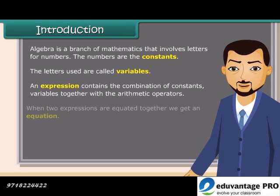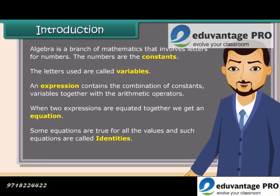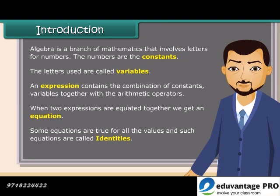When two expressions are equated together, we get an equation. Some equations are true for all the values, and such equations are called identities.